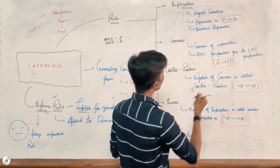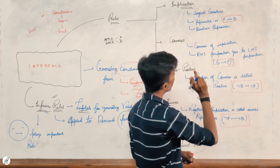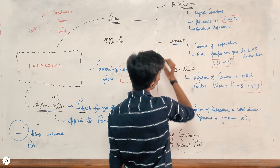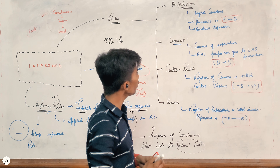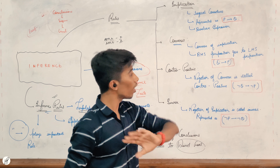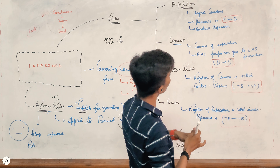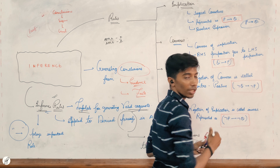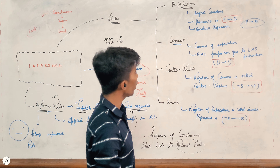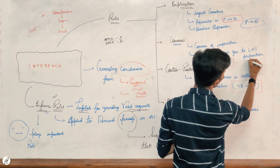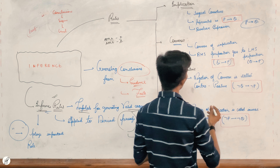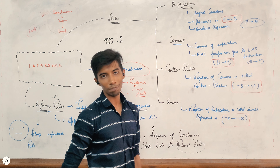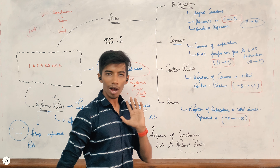Okay, P implies Q. Now what we have seen is Converse. Converse is just the inverse — Ulta. What we have seen is the implication P implies Q, and we have seen this inverted as Q implies P. What we have seen is Converse — the RHS becomes LHS and the LHS becomes RHS.